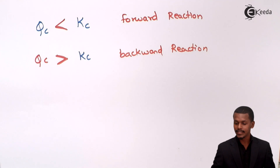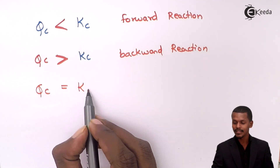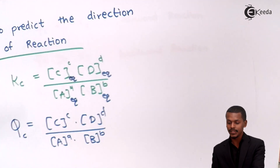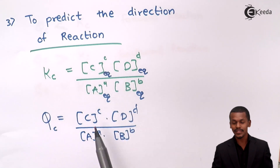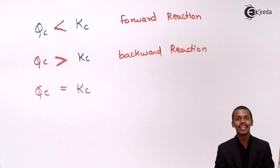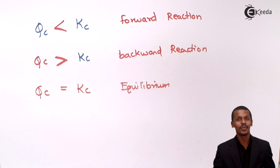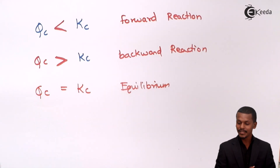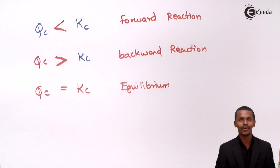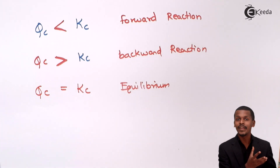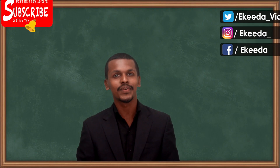And if Qc equals Kc, then the overall reaction is at equilibrium. So these are the uses of the equilibrium constant — it gives us an idea about not only the direction of the reaction and the extent of the reaction, but also the equilibrium concentration of an unknown reactant or product.